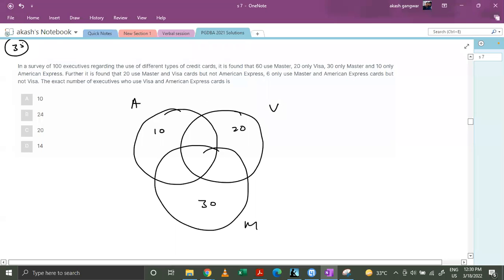Further, it is found that 20 use Mastercard and Visa cards but not American Express. So basically, let's say this is a, this is b, and c. So b plus c. It is found that 20 use Mastercard and Visa but not American Express, but not b, so basically c. So c is 20.